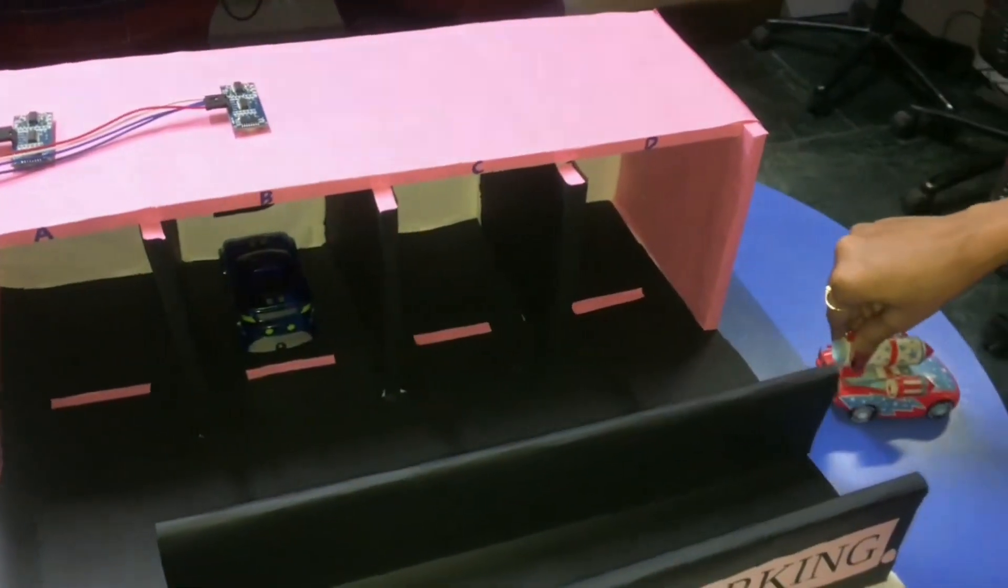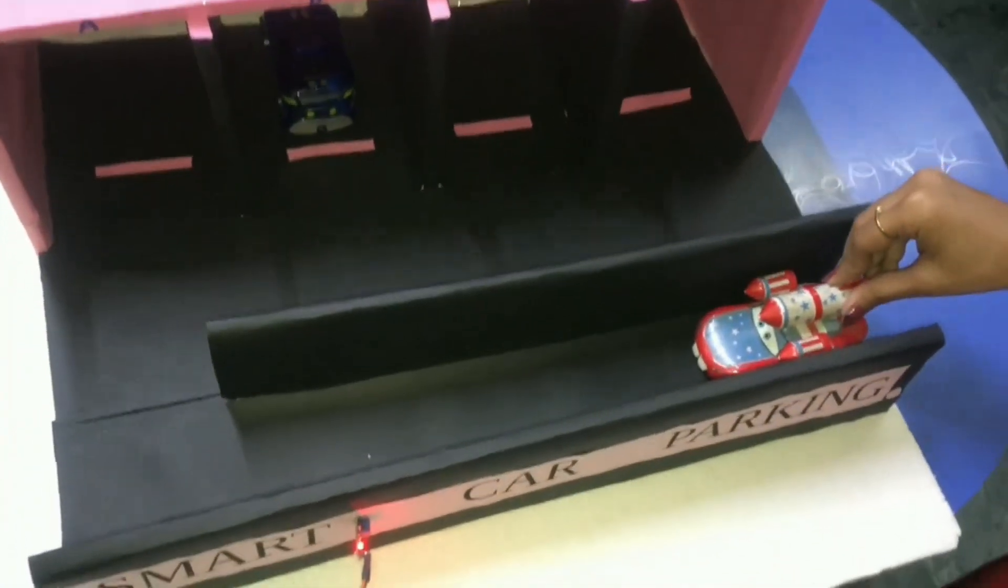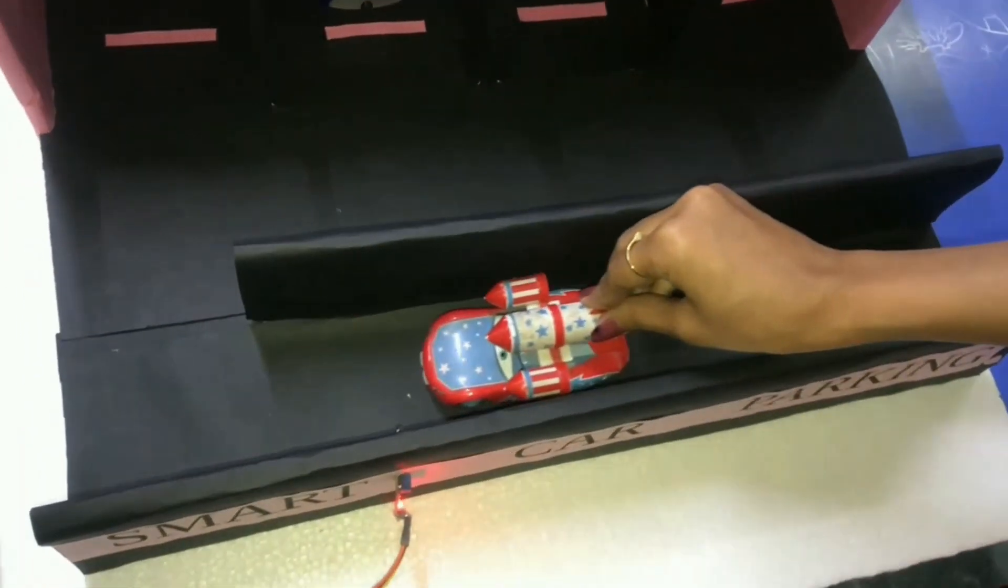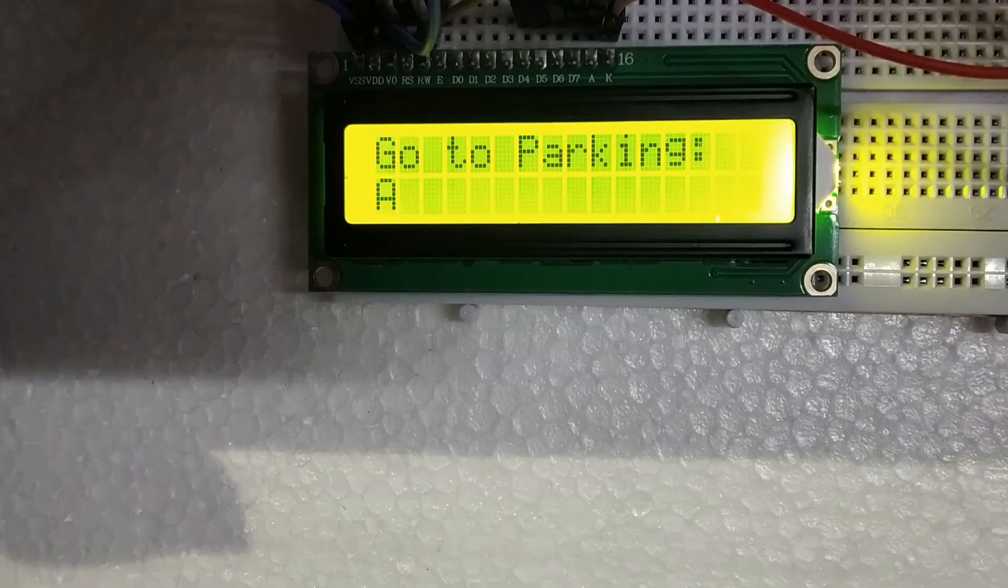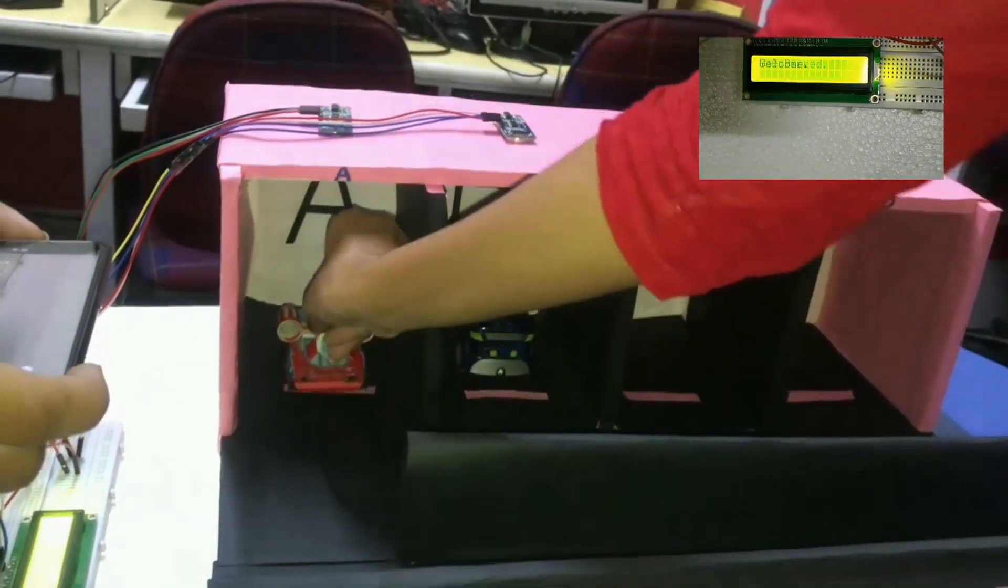If car A moves out of the parking and tries to come again, there would be a display on the LCD saying go to parking A. And similarly, we can show this for parking B as well.